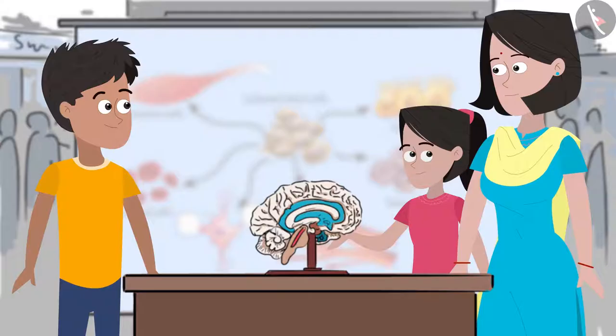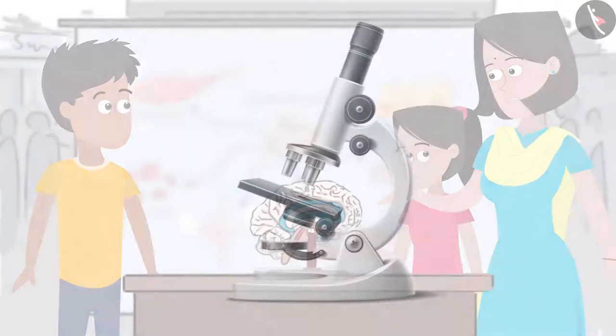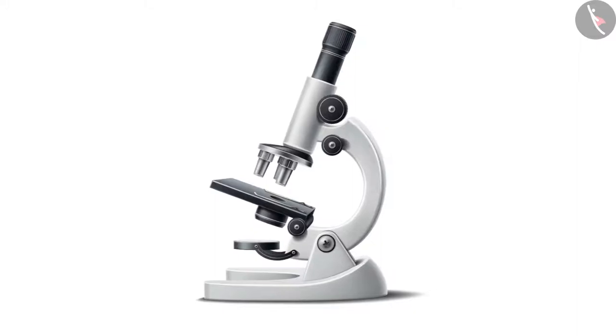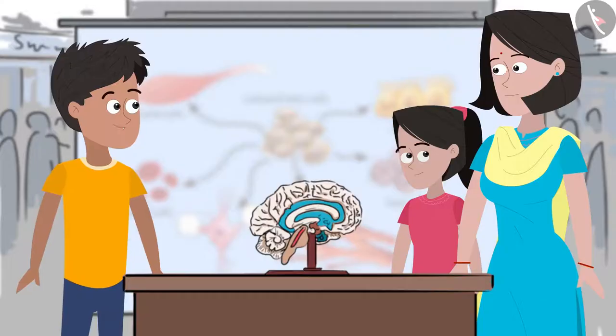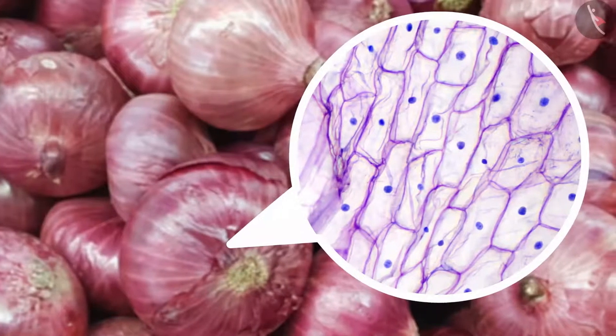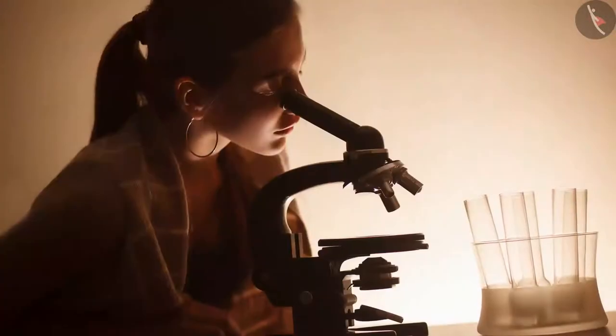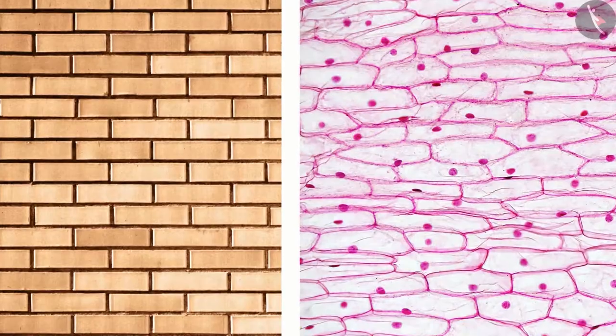Can we see what cells look like? Yes, but you need a microscope for that, as the cells are so tiny that they cannot be seen through the naked eyes. Mummy, we have a microscope here with the slide showing cells of an onion. Let me see. Wow! This looks like a brick wall.